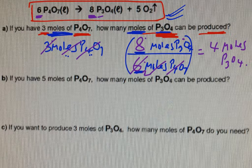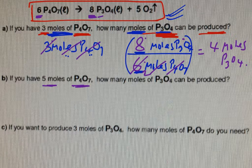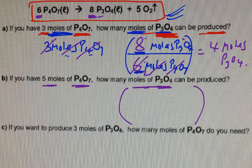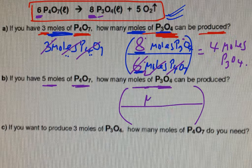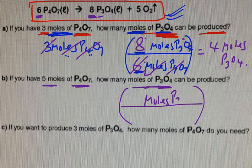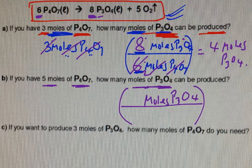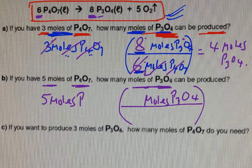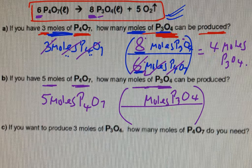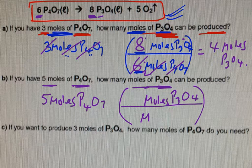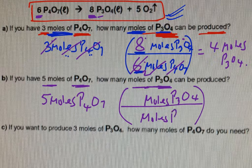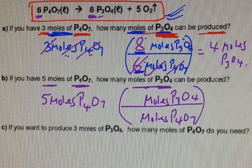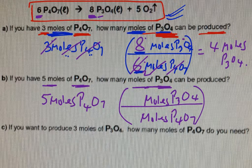This one is saying, now, if you have 5 moles of P₄O₇, how many moles of P₃O₄ are produced? So same principle. You set your conversion factor up, separation line. You're looking for moles of P₃O₄. That's your desired unit. You put 5 moles of P₄O₇ on the outside because that was given to you. You want to get rid of it. So you put moles of P₄O₇ in the bottom.